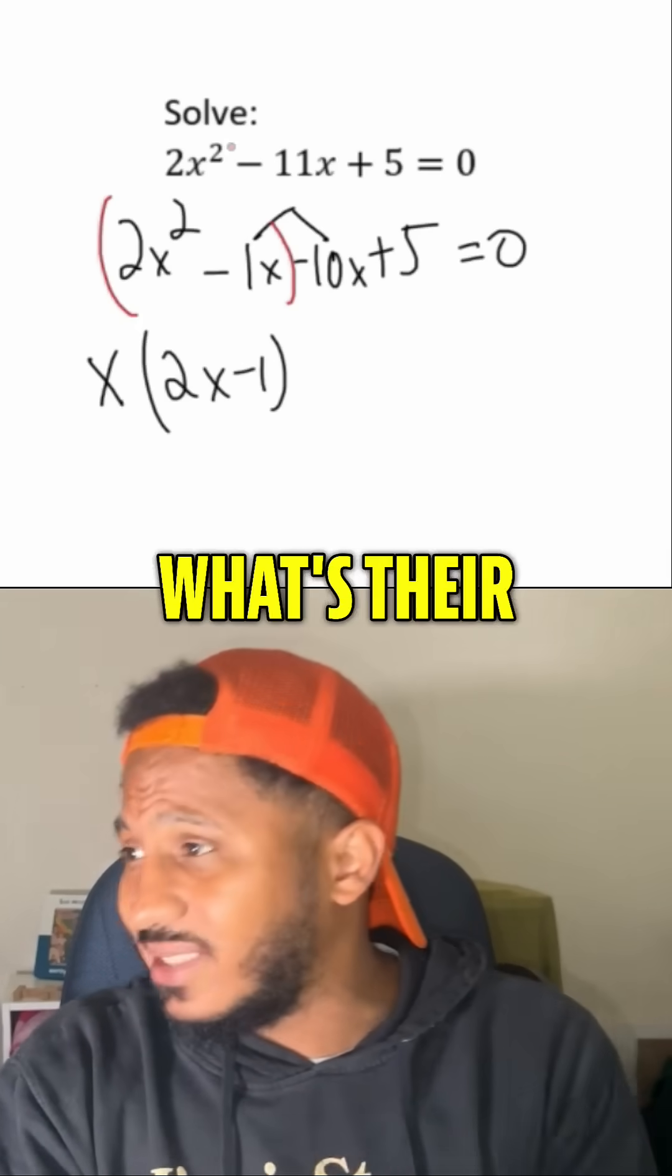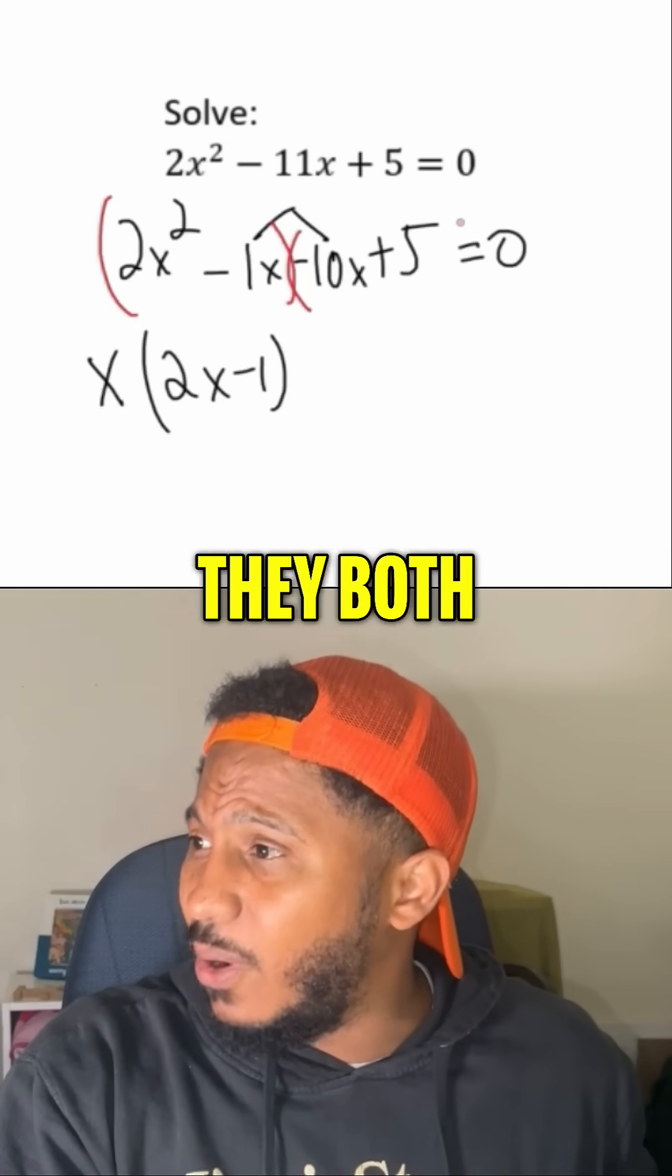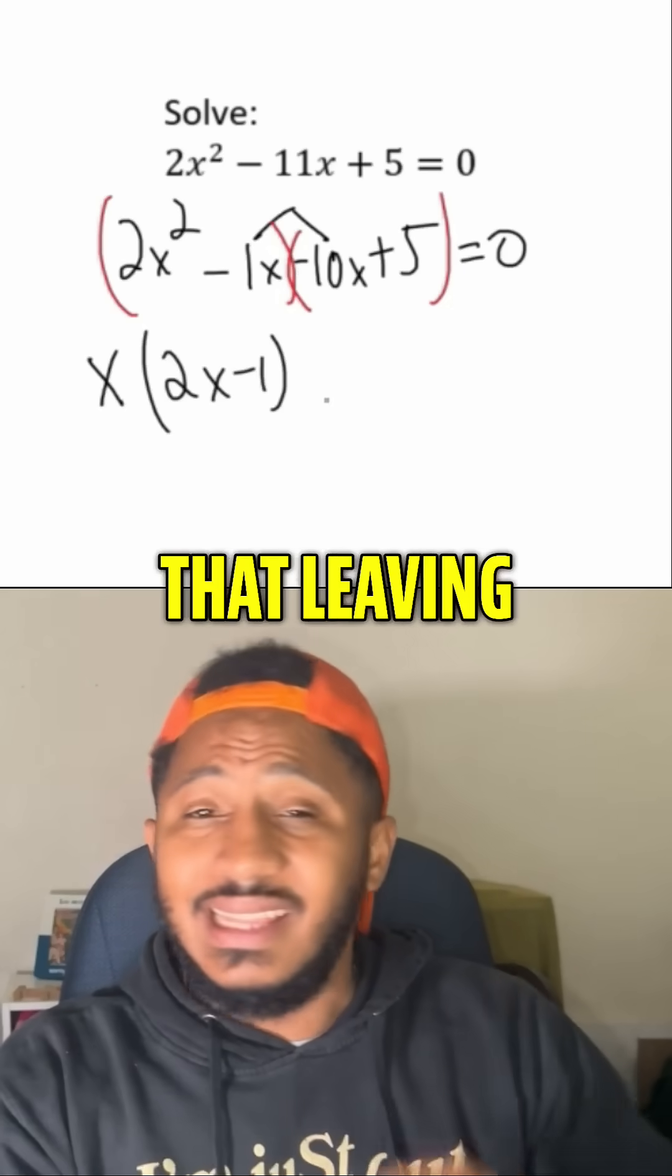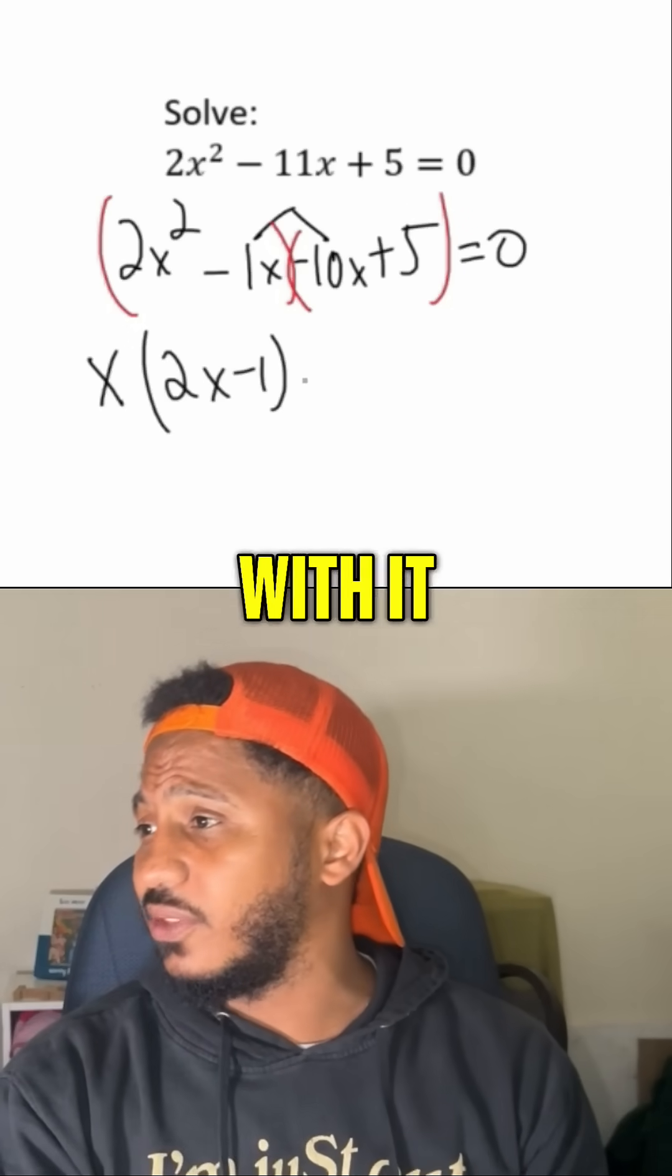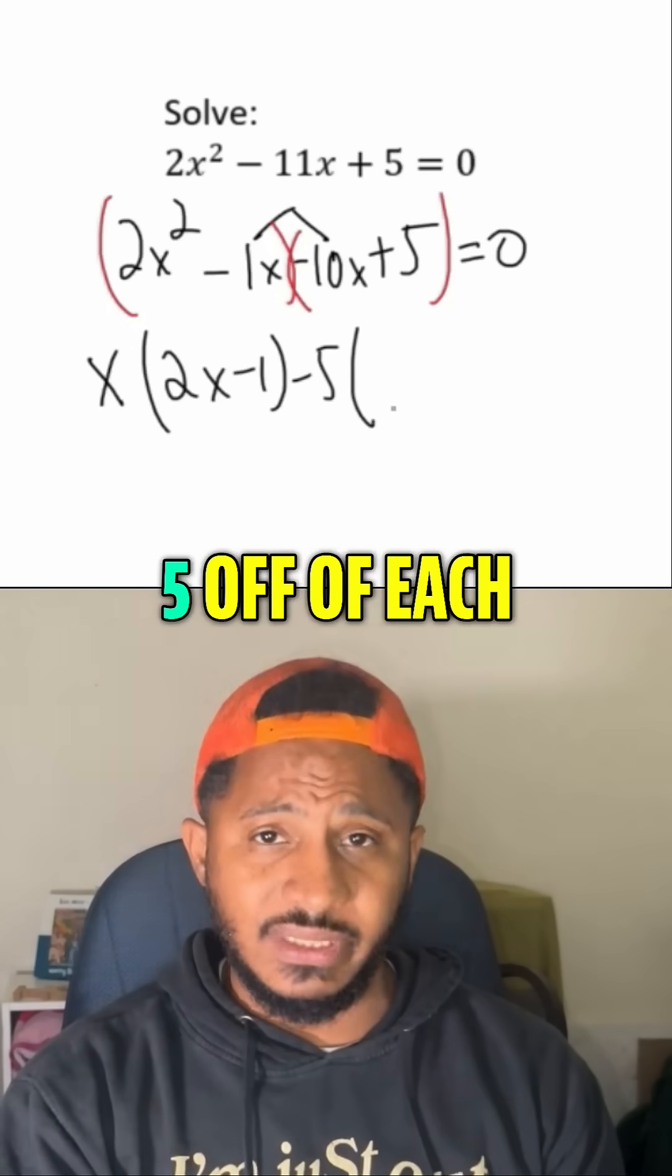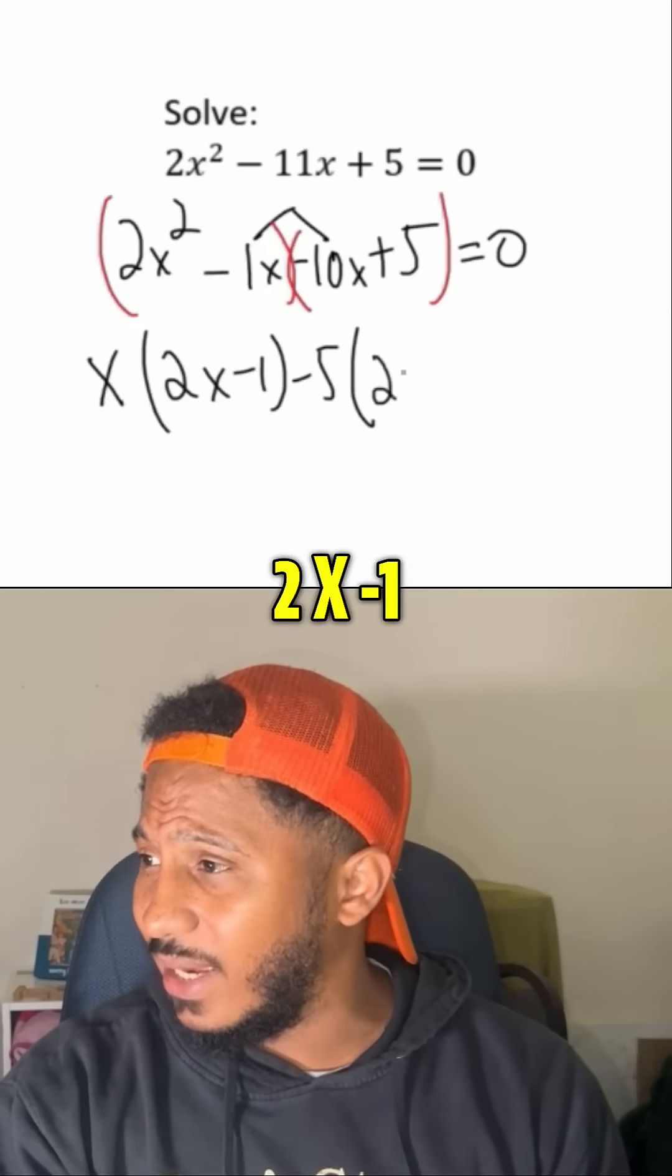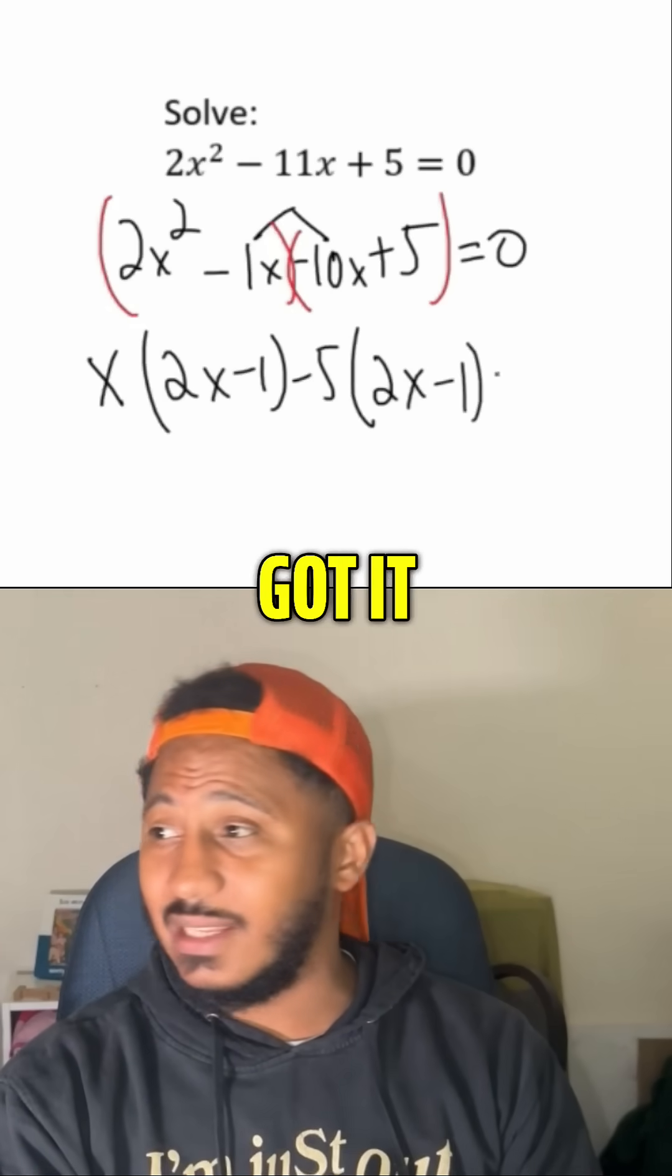Then group these second two, what's their GCF? What do they have in common? Well, they both have a 5 in common, but since that leading term has a negative, take the negative along with it. So take a negative 5 off of each. Then what's left is what? 2x minus 1. Got it.